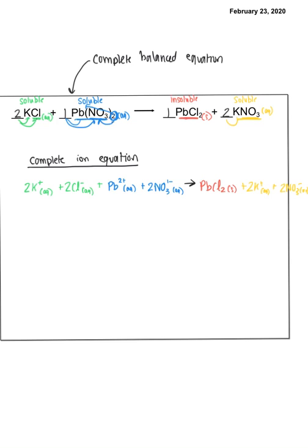So our next step is to find spectators. Spectator ions are the ones who aren't changing from before and after. So maybe an aqueous ion on the left and an aqueous ion on the right. If we look, I notice maybe we have K+, K+, right? Staying as aqueous. And we have 2NO3 minuses, 2NO3 minuses.